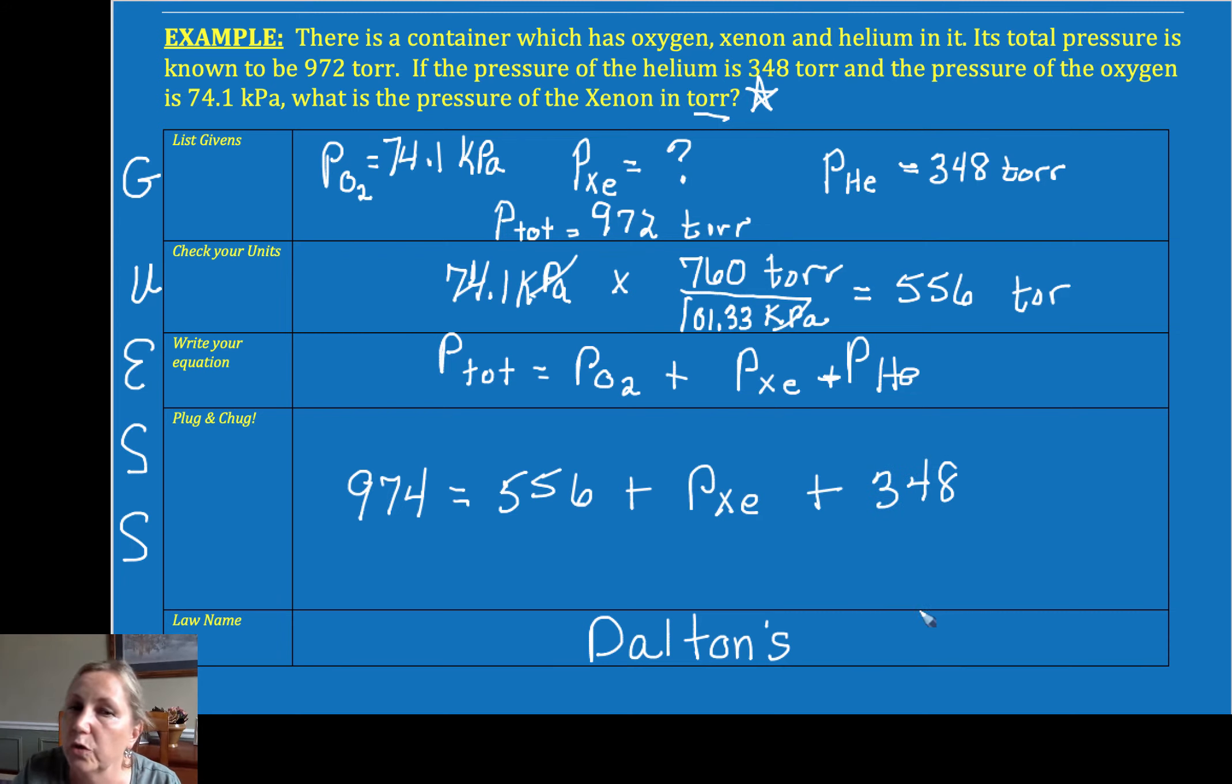Remember, you need to do what your teacher says to do. So if your teacher or professor wants you to show your units in your math, you need to do that. My pressure of xenon is equal to 68 torr. I do take off points if you forget your units.